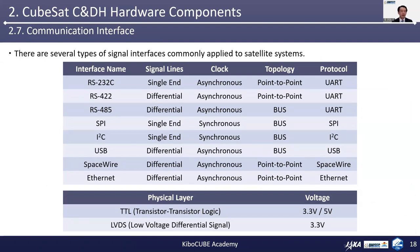Now let's take a look at common communication interfaces widely used for satellites. There are several types of typical signal interfaces commonly applied to satellite systems such as RS-232C, RS-422, RS-485, SPI, I2C, USB, SpaceWire, and Ethernet, listed in this table.